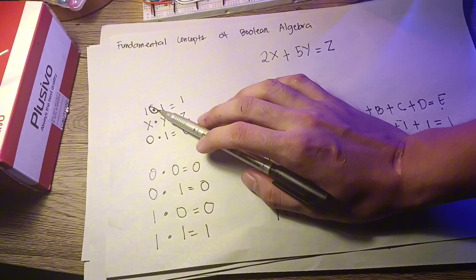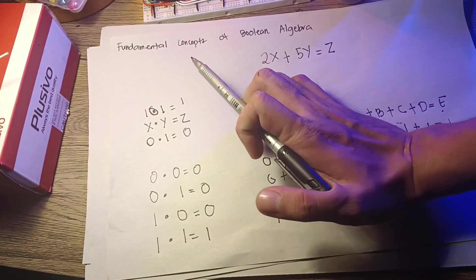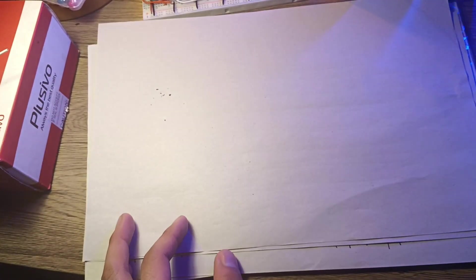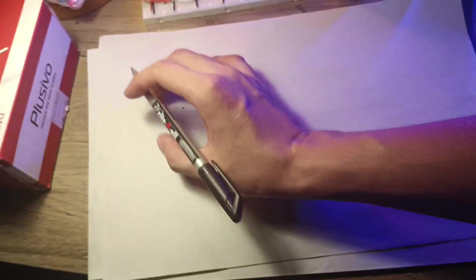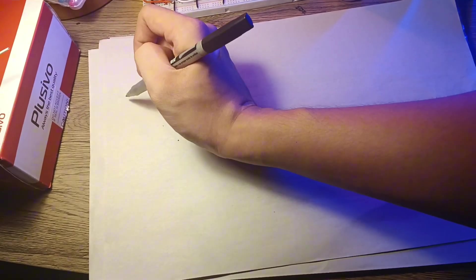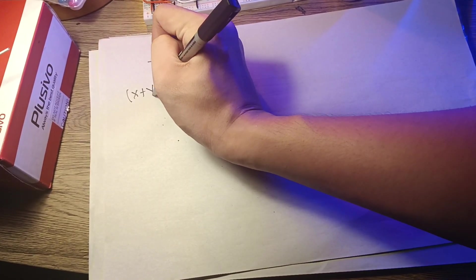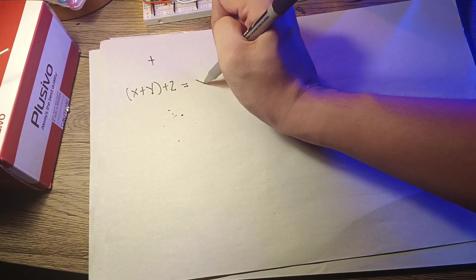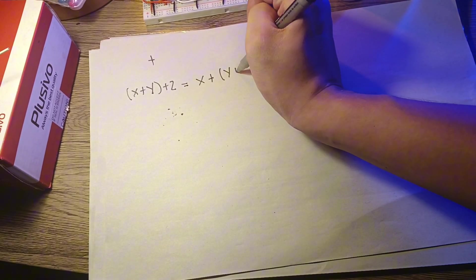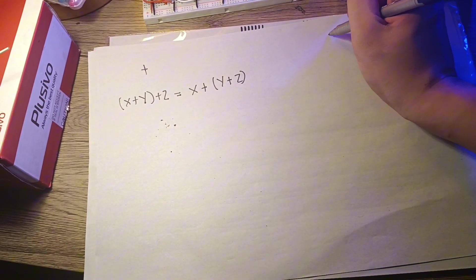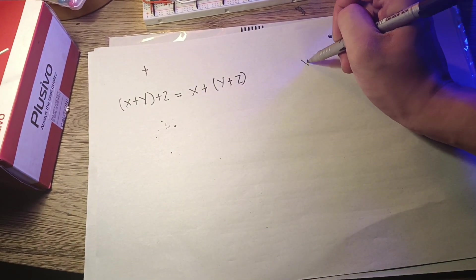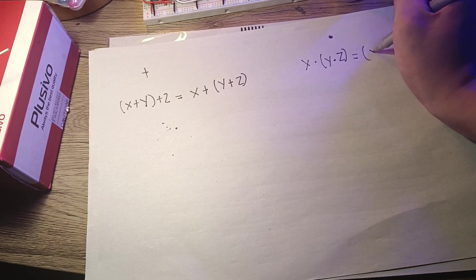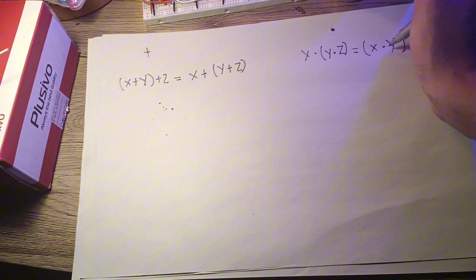Both the plus and the multiplication sign obey a mathematical rule called the associative law. This law says that for plus, x plus parenthesis y plus z equals parenthesis x plus y plus z. And for the multiplication, x times parenthesis y times z equals parenthesis x times y times z.